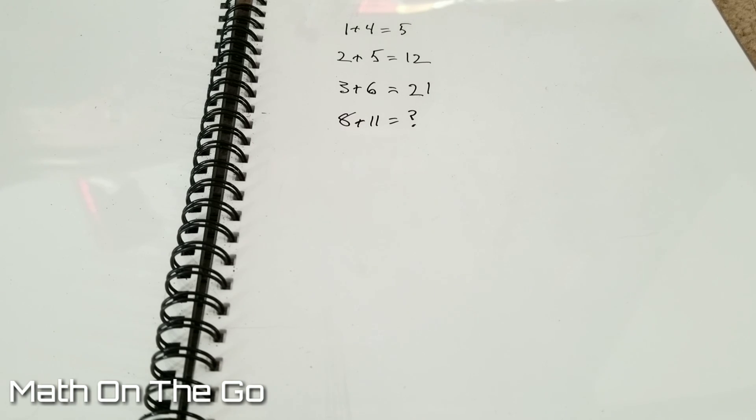So upon first look of this problem, it seems a little confusing. What are we supposed to do with this? As I said, 1 plus 4 does equal 5, but 2 plus 5 does not equal 12.